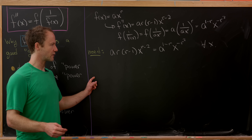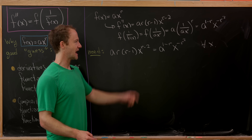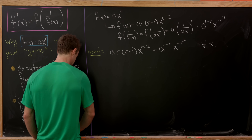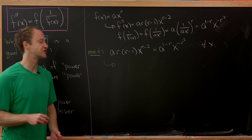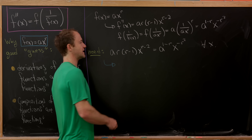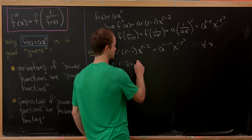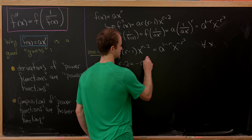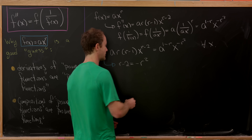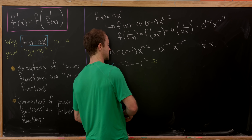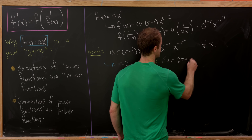If we've got a power function on the left and a power function on the right, the exponents have to be the same — otherwise they wouldn't be the same function. So we need r minus 2 equal to minus r squared. That's a quadratic equation: r squared plus r minus 2 equals 0.